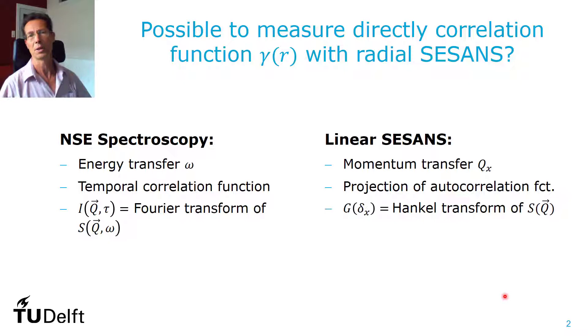We came to this idea because in normal neutron spin echo spectroscopy you measure directly the energy transfer. You do that by measuring Fourier transform of the scattering function and that gives you the intensity as a function of time. With normal linear SESANS, you measure only one component of the momentum transfer of the neutron.